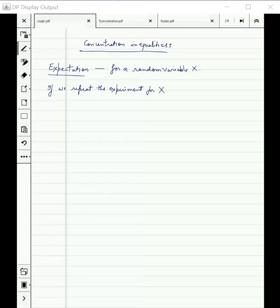If we repeat this experiment for X multiple times, then the average value of X approaches E[X]. This was the meaning given to the expectation of X. So repeat the experiment, then the average value of X in this multiple times as n tends to infinity, the average value will tend to E[X].